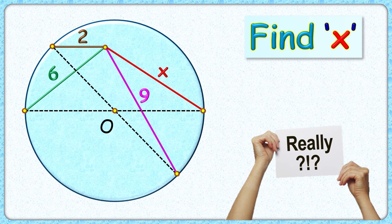This question is really amazing. We are given a circle with center O, and the length of the brown, green, and pink line segments are 2, 6, and 9 centimeters. The exciting part is that with this limited data, we have to find the length of this red line segment.